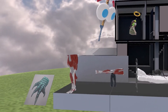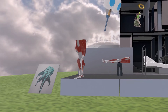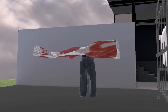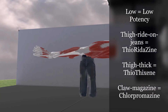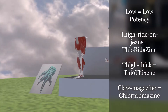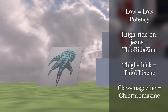Then we see a few more characters on the first floor — these are the low-potency ones. We see a pair of jeans giving a ride to this thigh — thigh going for a ride on jeans for thioridazine. This drug is not widely used because of its cardiac toxicities. We also see a very thick thigh for thiothixene, but this one is no longer used. And then we have a magazine of a claw — claw magazine for chlorpromazine. Chlorpromazine was actually the first antipsychotic discovered, in 1952.